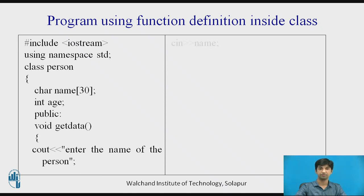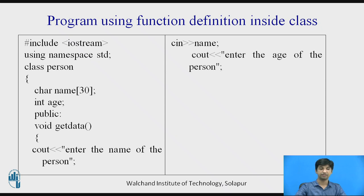Then 'cin >> name' — it works like scanf. The name is input by the user through the keyboard and inserted into the variable called name. Then cout displays 'Enter the age of the person' on the screen, and 'cin >> age' takes the age input from the user. Then void display — this function displays whatever input was received from the user back onto the screen.